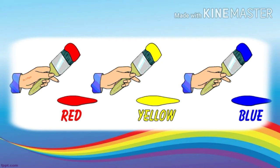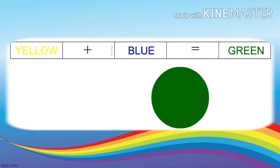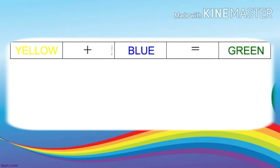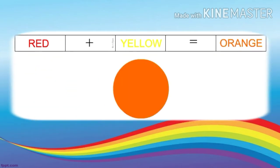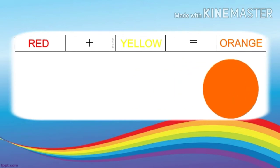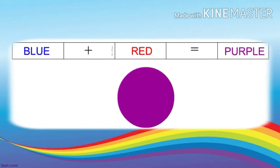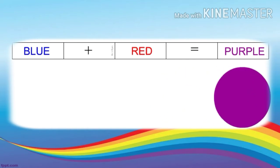Now with these colors we will create new colors. Yellow and blue make green — a secondary color. Red and yellow, which are primary colors, make orange — a secondary color. Blue and red, which are primary colors, make purple — a secondary color.